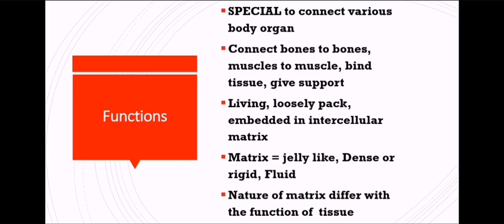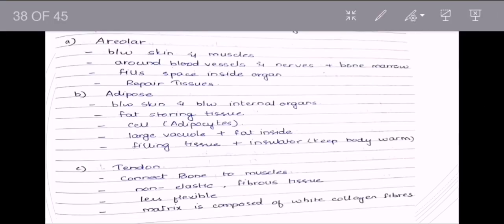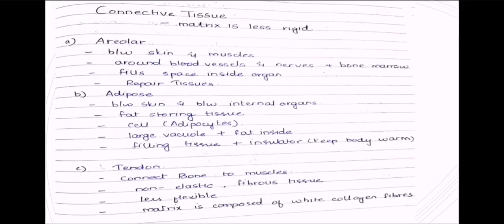The nature of the matrix differs with the function of the tissue. Based on what function a particular tissue has to provide, the matrix will differ — it can be jelly-like, dense, rigid, or fluid. We classify connective tissues based on how the matrix is. Types include: areolar, adipose, tendon, and more. If the matrix is less rigid, the first type is areolar tissue, which is present between the epidermis — the outer layer of skin — and the muscles, around blood vessels, nerves, and even the bone marrow. Its main function is repairing tissues.